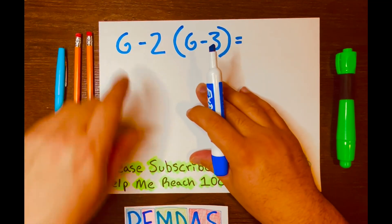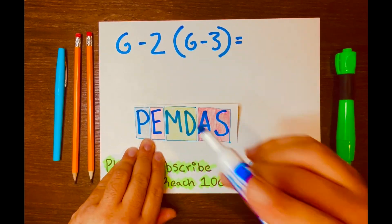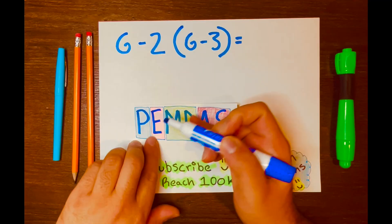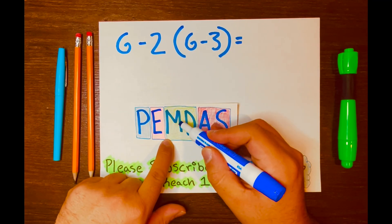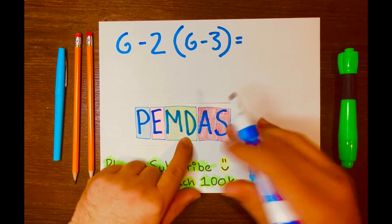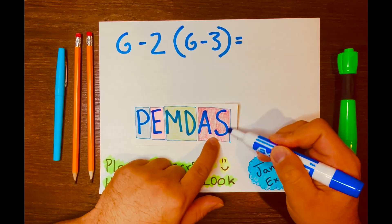So the first thing you'll do is looking at PEMDAS. Remember, P stands for parentheses, E stands for exponents, M for multiplication, D for division, A for addition, and S for subtraction.